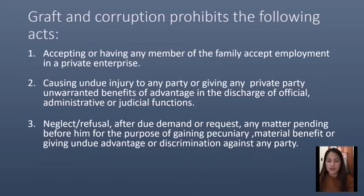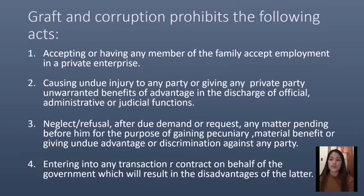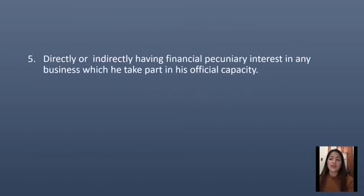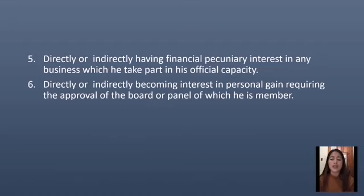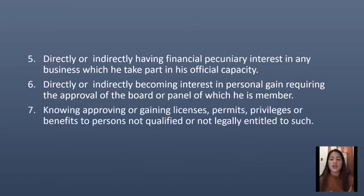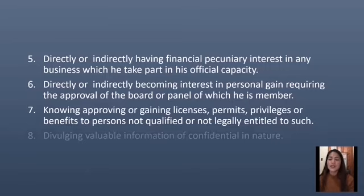Further prohibited acts under the Anti-Graft and Corrupt Practices Act include: fourth, entering into any transaction or contract on behalf of the government which will result in disadvantage to the latter; fifth, directly or indirectly having financial or pecuniary interest in any business in which one takes part in an official capacity; sixth, directly or indirectly becoming interested in personal gain requiring the approval of a board or panel of which one is a member; seventh, knowingly approving or granting licenses, permits, privileges, or benefits to persons not qualified or not legally entitled to such; and eighth, divulging valuable information of a confidential nature.